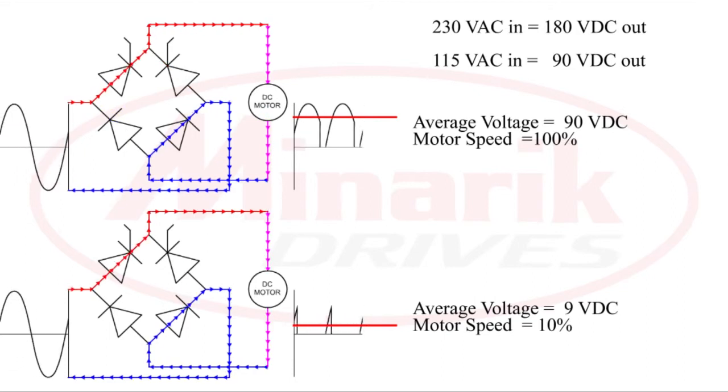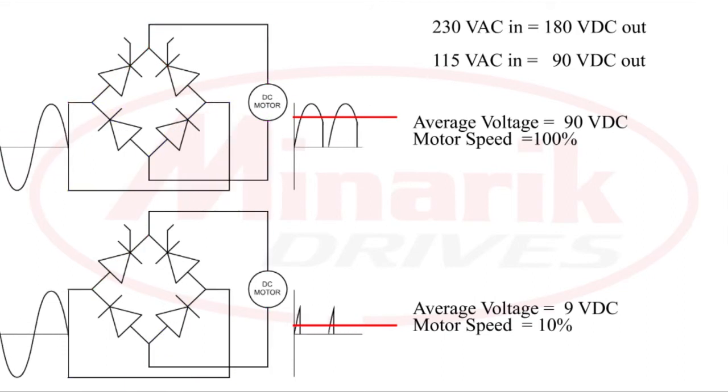As we turn the SCRs down, the average voltage to the motor lowers, and the DC motor speed will decrease.